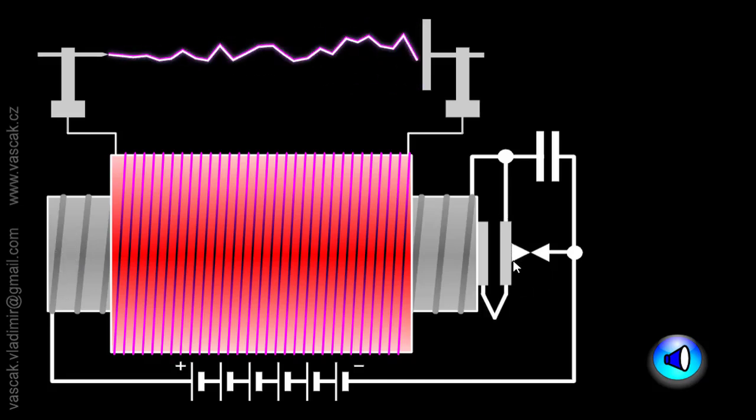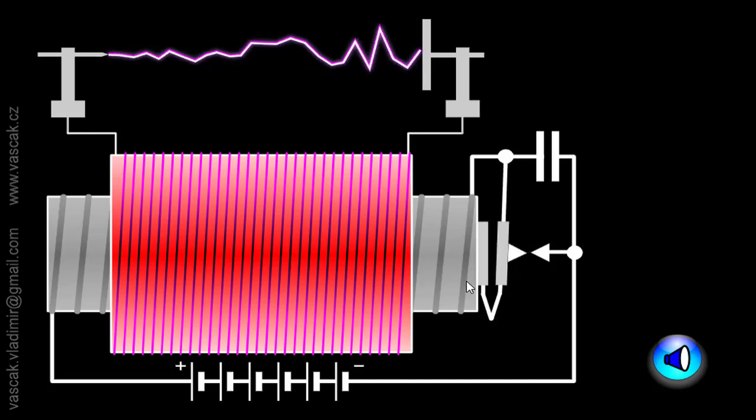Now due to this switching action, the magnetic field will change continuously. And the changing magnetic field will produce alternating current in the secondary coil.